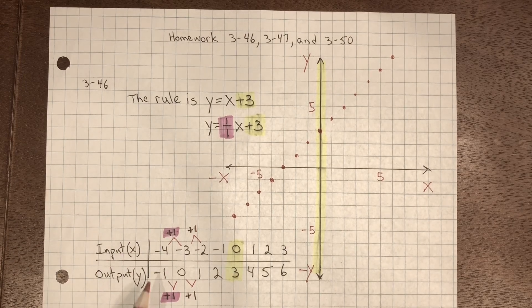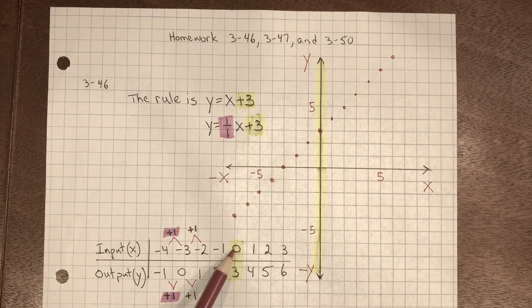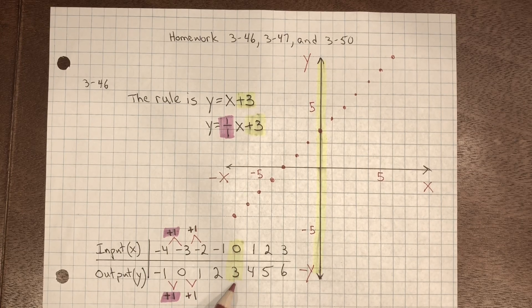If I look at my table, I have it right here. Zero on the x, three on the y.